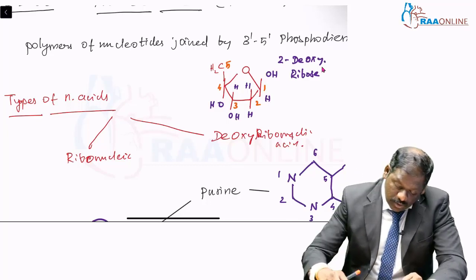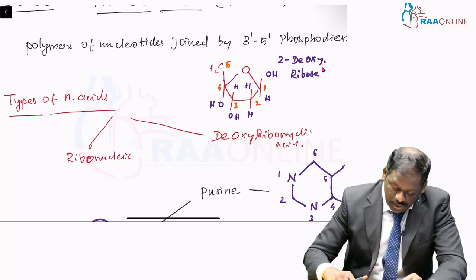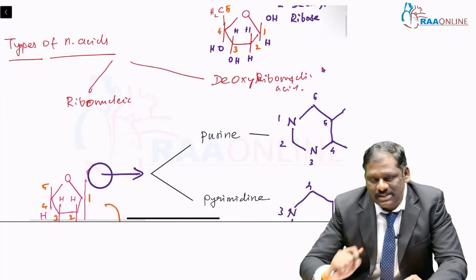It is this backbone upon which your name of DNA or RNA is dependent. Now, to this ribosugar, you add a base.